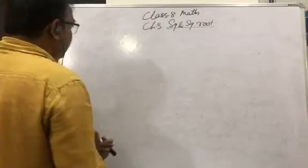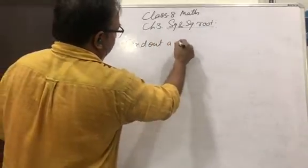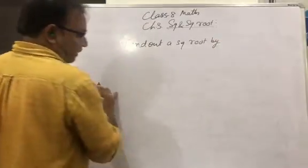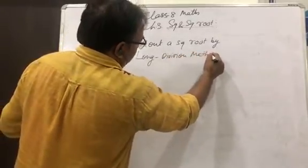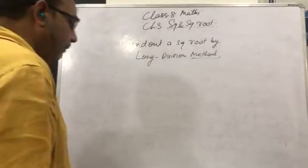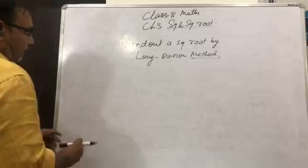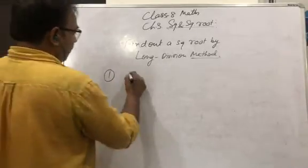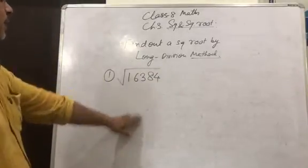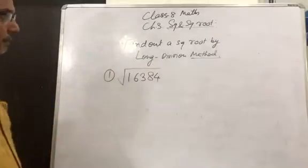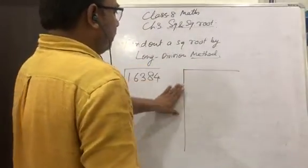Now let us find the square root by the long division method — also called the division method, both are the same. Suppose we take a bigger number; let us take example number 1: find the square root of 16384 by long division method. You can make a table arrangement with a line like this, and write the number inside it.